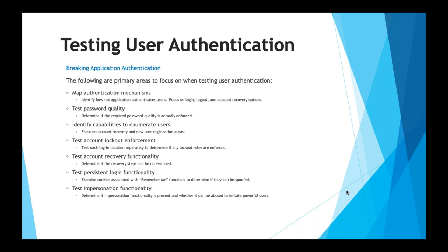What can you check to verify whether authentication is proper? You can test password quality — some applications accept six-character passwords, which are very easy to brute force. You can enumerate users, and if you find them you can try to get their passwords. You can also test for a lockout mechanism. If there's no lockout, you can try unlimited passwords. You can take over credentials, an account, or even the entire web application.